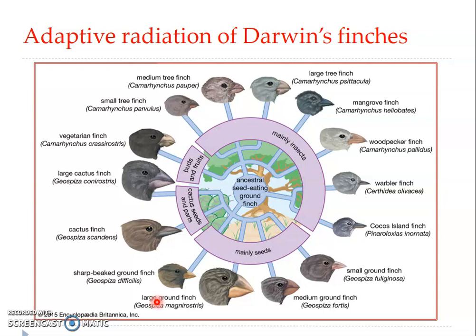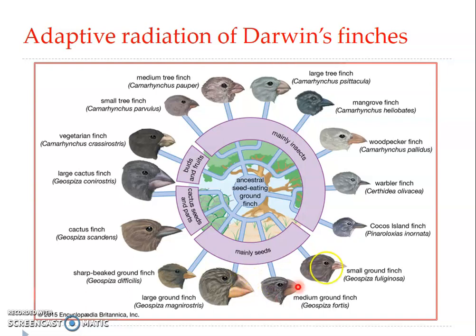The three seed-eater ground finches are the small ground finch Geospiza fuliginosa, the medium-beaked Geospiza fortis, and the large-beaked Geospiza magnirostris. These three ground-dwelling seed-eater finches occur together in the coastal lowlands of several islands. Each species is specialized in feeding on seeds of a certain size, depending on beak size. The small-beaked finch feeds on small grass seeds, while the large-beaked finch eats large, hard fruits.